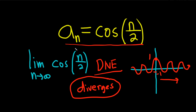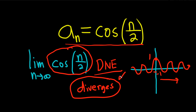Basically what you do is take the limit, and in this case you just really have to use intuition. The cosine is a function that oscillates, so it's not really approaching anything. So the answer is diverges.